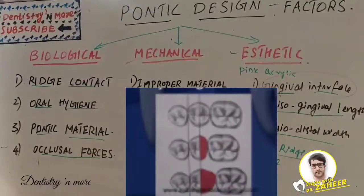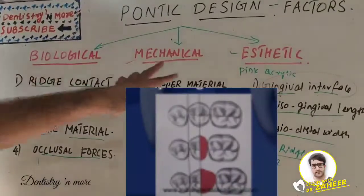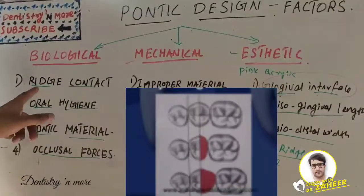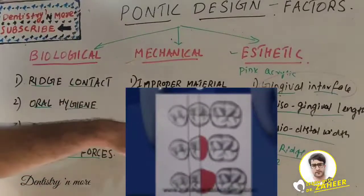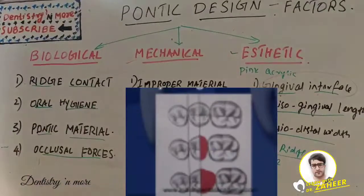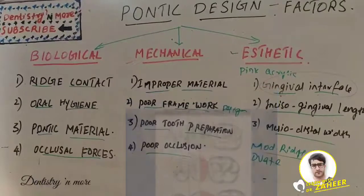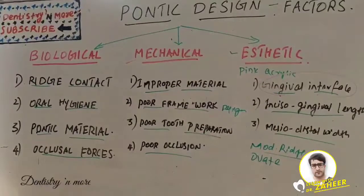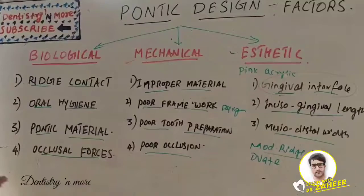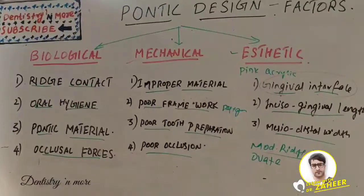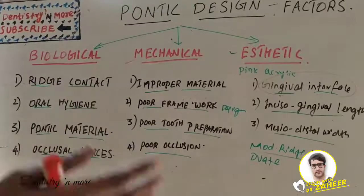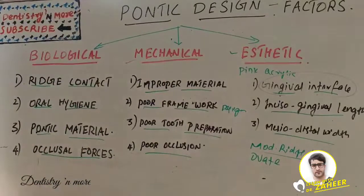In summary, the factors involved in pontic design are biological, mechanical, and aesthetic. In biological factors: ridge contact, oral hygiene considerations, pontic material, and occlusal forces. In mechanical: material, framework, tooth preparation, and occlusion. In aesthetics: gingival interface, incisal/gingival length, and mesiodistal width. This is a commonly asked essay question — sometimes pontic design and factors are asked together, sometimes separately. Hope you understood this topic.